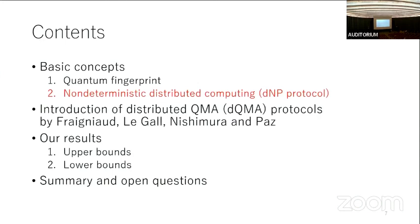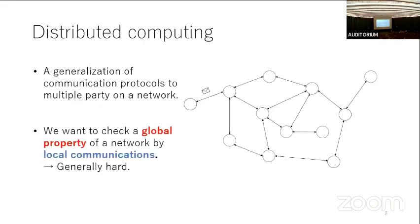Next, let me introduce the concept of non-deterministic distributed computing, which is the distributed analog of NP. Distributed computing can be regarded as a generalization of communication protocols to a multi-party protocol or network. Each node knows some local information and can communicate with adjacent nodes. Ideally, we want to derive a protocol that can check some global quality of a network using only local communication, but this is generally hard.